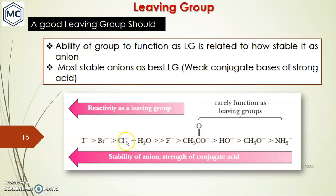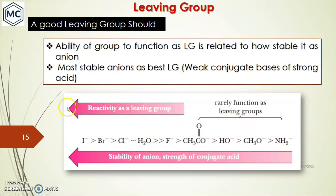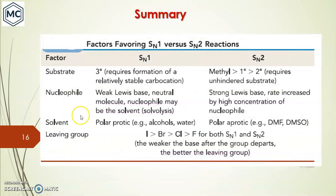I⁻ is a better leaving group than Br⁻, which is better than Cl⁻, because I⁻ is more stable when it leaves compared to F⁻. These are relatively poor leaving groups. The reactivity order of leaving groups is: I⁻ > Br⁻ > Cl⁻ > F⁻.